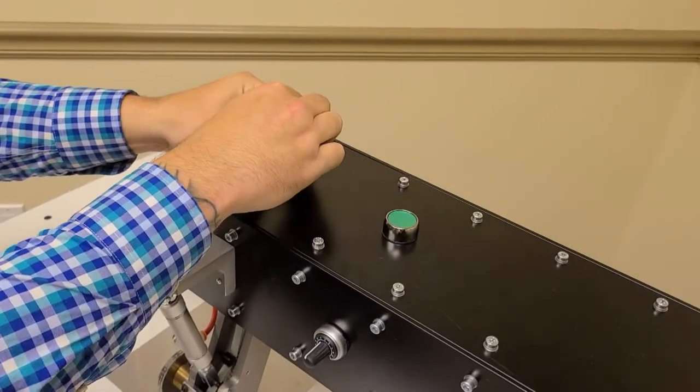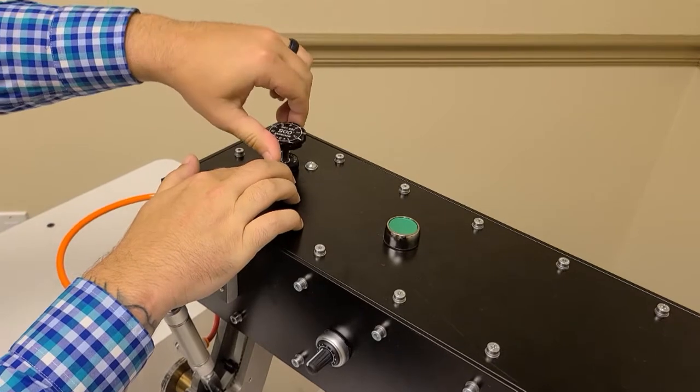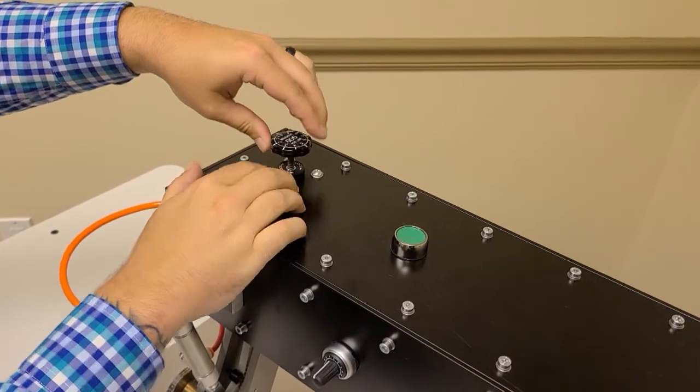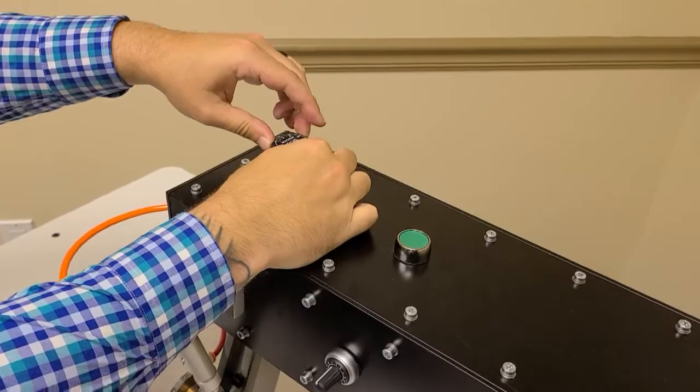Welding anvil height is adjusted with a thumb screw knob located on the top of the machine. Turn the screw in or out to adjust the welding anvil for different material thicknesses.